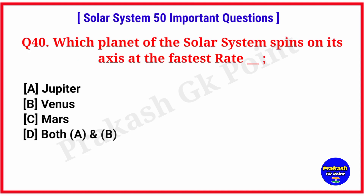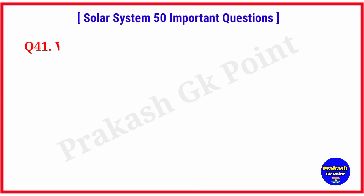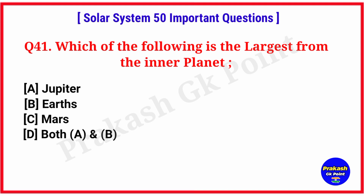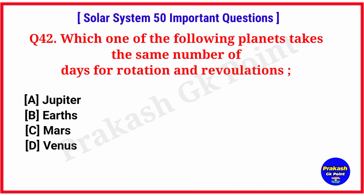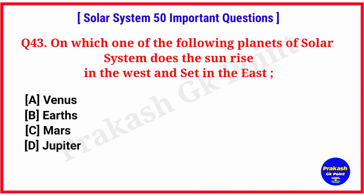Which planet of the solar system spins on its axis at the fastest rate? Answer: option A, Jupiter. Which is the largest of the inner planets? Answer: option B, Earth. Which one of the following planets takes the same number of days for rotation and revolution? Answer: option D, Venus. On which planet does the sun rise in the west and set in the east? Answer: option A, Venus.